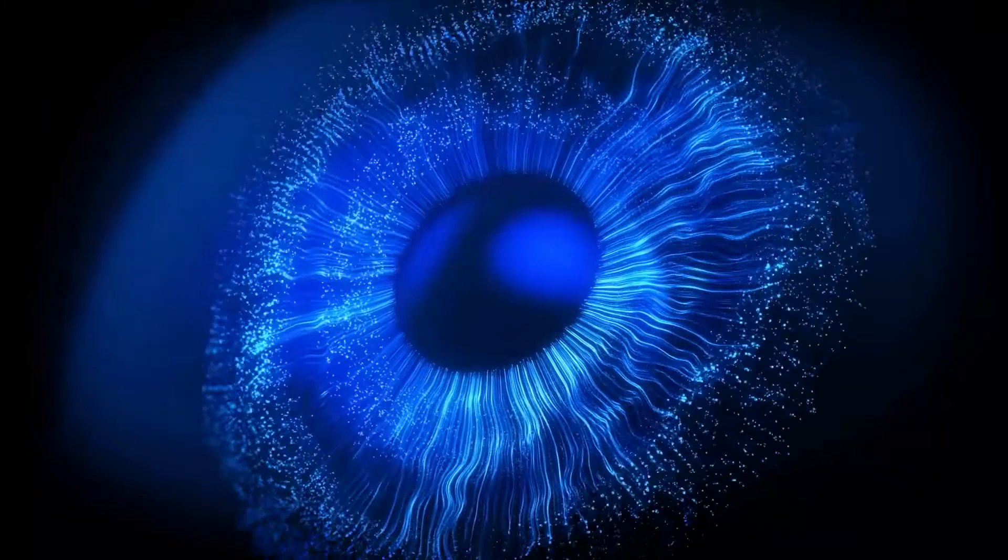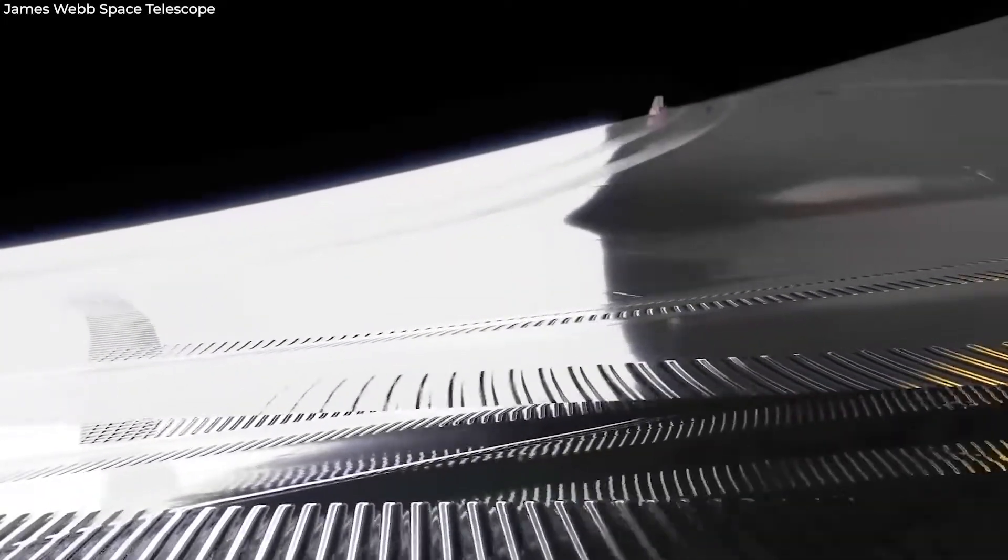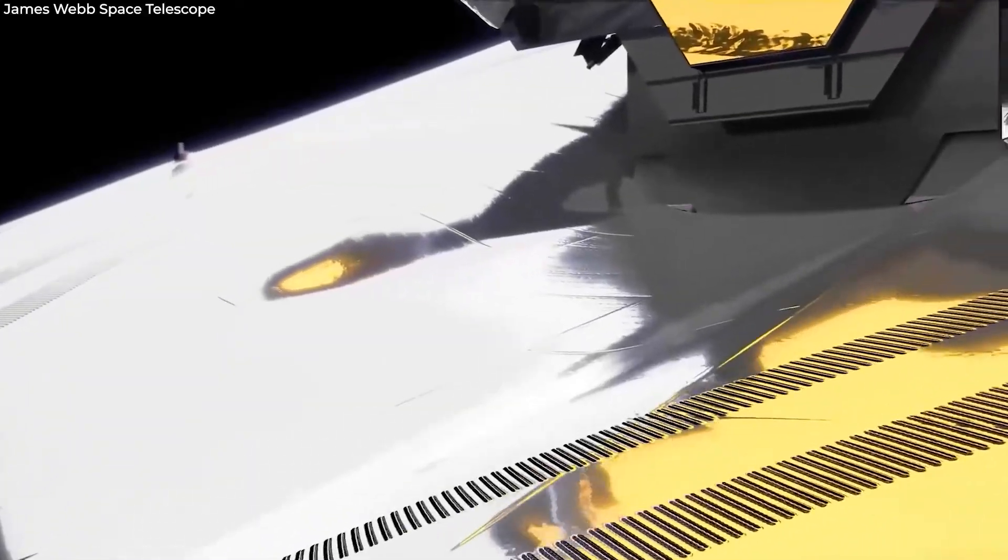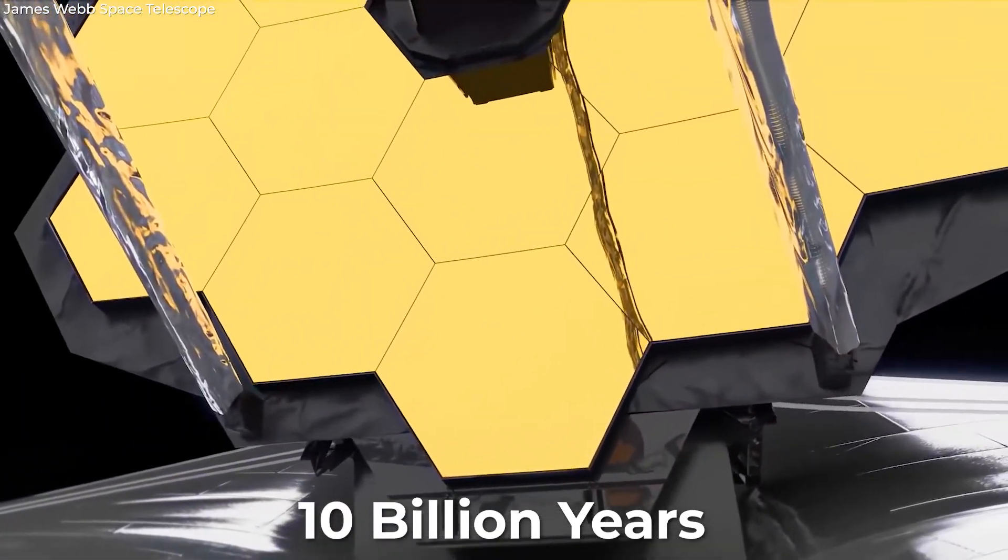Infrared light is invisible to human vision. The more extreme the redshift, the further cosmic light has traveled. Before reaching the James Webb mirrors, light from early galaxies like Maisie's galaxy had traveled for roughly 10 billion years.